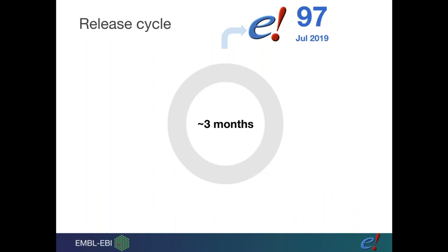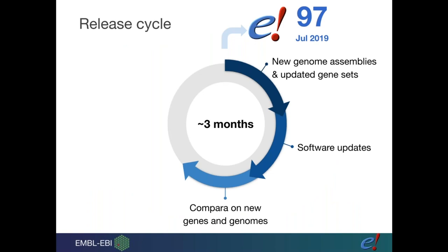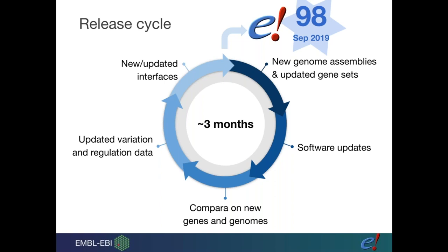An important thing to know about Ensembl is our release cycle. Every three months we publish new data and tools, including updated genome assemblies and gene sets, software updates, updated comparative genomics, variation data, and interface improvements. The next release — release 98 — is expected by end of the month; we're currently on release 97.